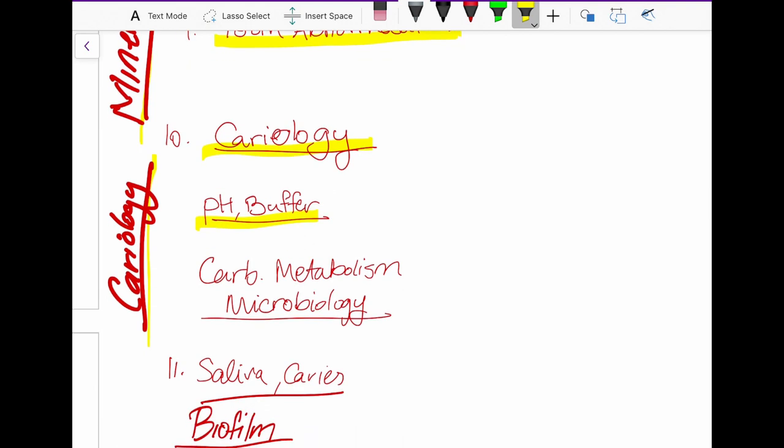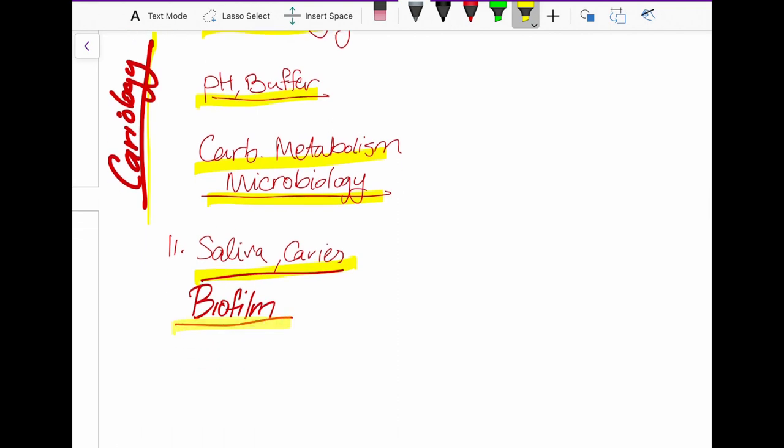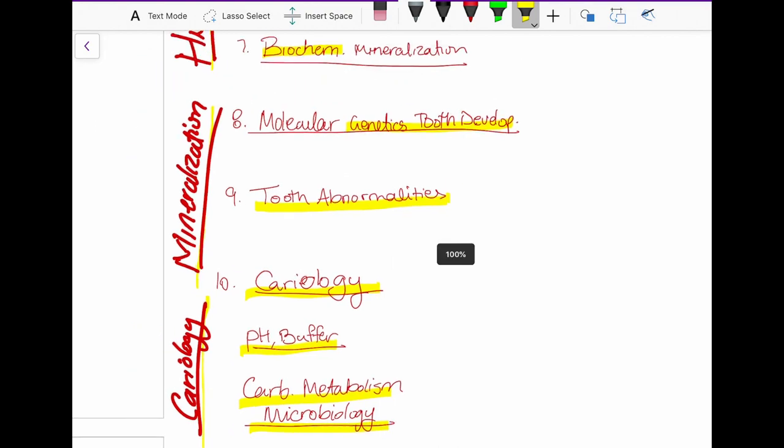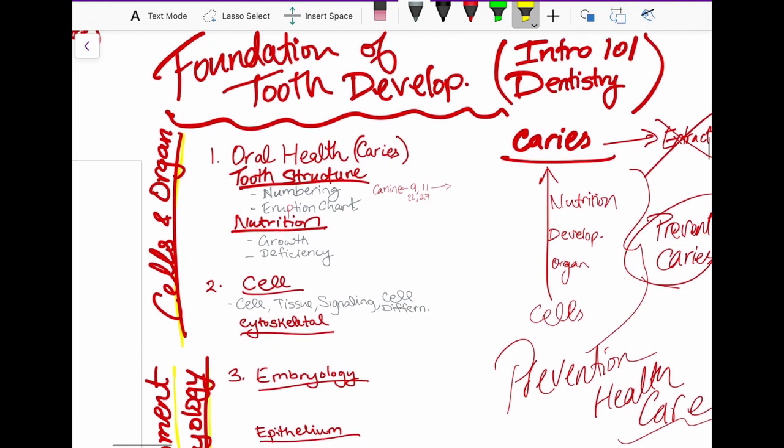Then you have cariology, which is caries, you have pH and buffer, you have, now we go to how caries develop. So first we have to understand what are carbohydrates, how are they metabolized, why is it bad? We can't just have a notion of sugar and carbs are bad for dentistry or for caries or tooth structure. We have to understand what causes, and if we can tweak a few things, then we can make the bad carbs into good carbs. And what is the role of saliva and caries, and what is a biofilm? So that is our fundamentals to tooth development, fundamentals to dentistry.